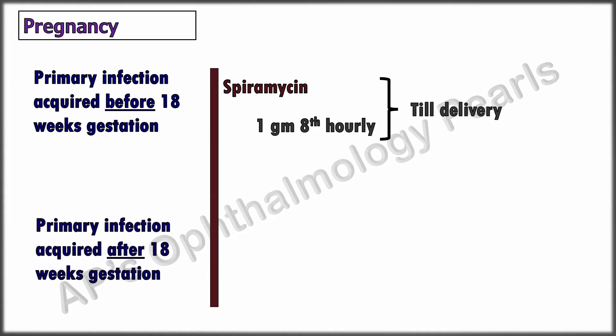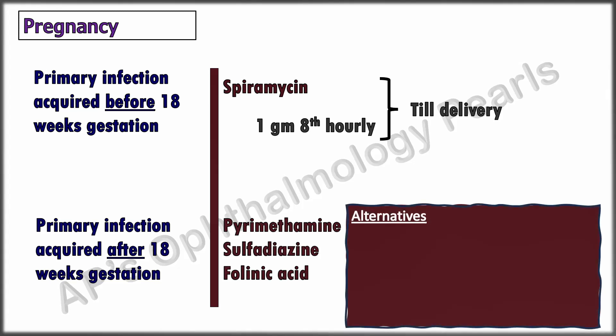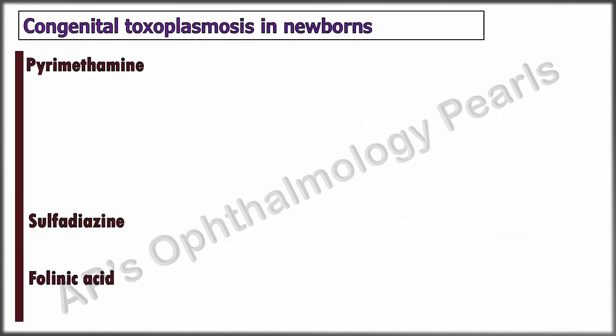If primary infection is acquired after 18 weeks of gestation, or fetal infection is confirmed or highly suspected, the pyrimethamine-sulfadiazine-folinic acid combination should be given. If amniotic fluid PCR becomes positive or fetal infection is highly suspected in a woman taking spiramycin, treatment should be switched from the 18th week onwards to the pyrimethamine-sulfadiazine-folinic acid combination. Pyrimethamine is not used prior to 18 weeks of gestation because of its teratogenicity. Alternatives include clindamycin, atovaquone, and azithromycin, or intravitreal clindamycin with short-acting periocular corticosteroids.